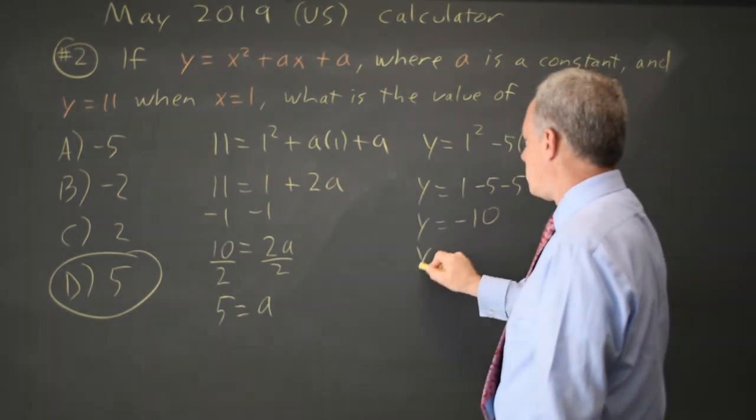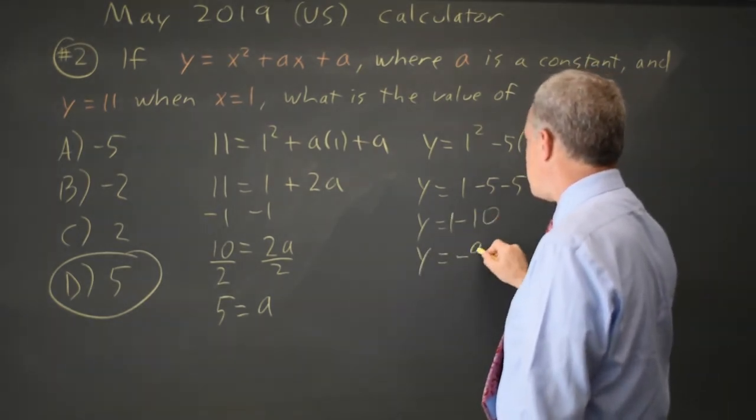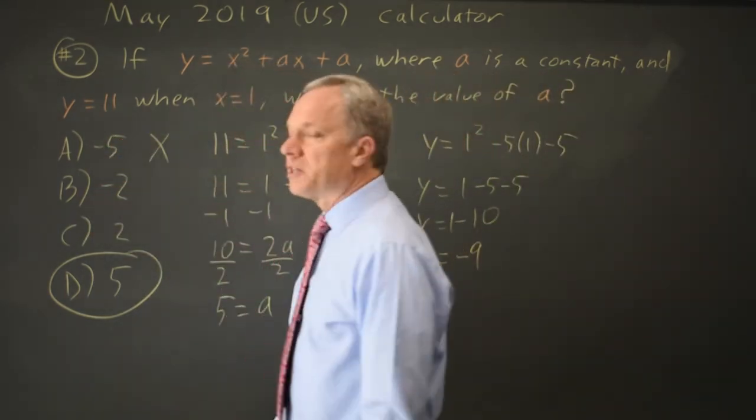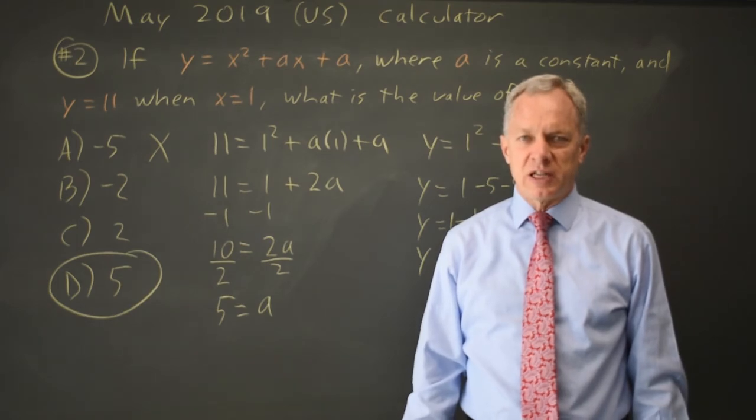That's y equals 1 minus 5 minus 5, or y equals 1 minus 10, y equals negative 9, which is not 11. So choice A is not correct, and you can continue like that until you get to an answer that does give you 11 on the left.